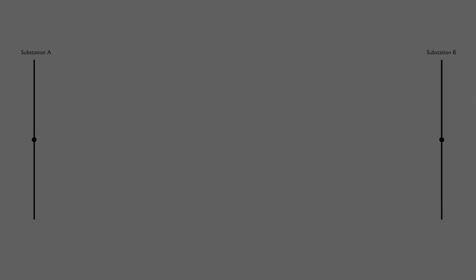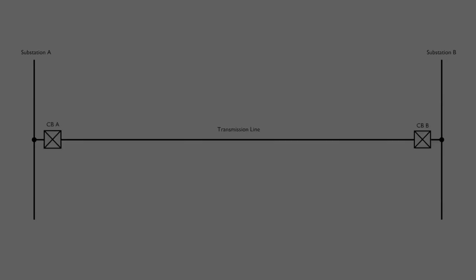This is the bus of substation A. On the right hand side of the screen, this is the bus of substation B. A transmission line, as shown, connects the bus of substation A and substation B. The circuit breakers of substation A and substation B are shown here as CBA and CBB respectively. Now we add current transformers in the diagram. CTA is the current transformer at substation A and CTB is the current transformer at substation B. Both of the current transformers are connected after the circuit breakers, as shown. This means both the current transformers are line side current transformers.